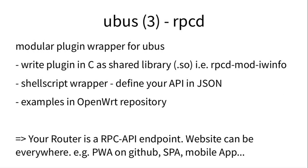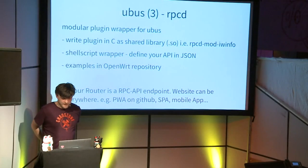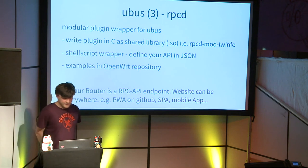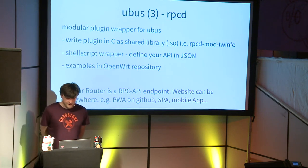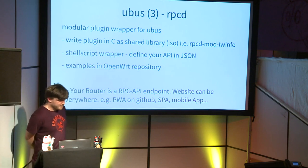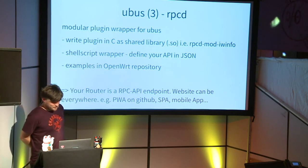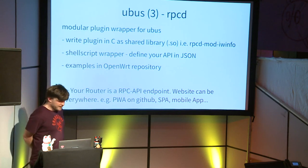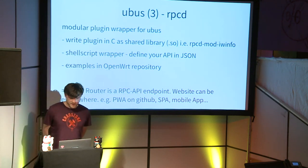If you want to add your own functionality to RPCD, you can write a C shared library or use a shell script wrapper, and RPCD will pass its parameters to your custom shell script. There are many examples in the OpenWRT repository. The basic idea is that the router is just an RPC API endpoint and your client can be anywhere — for example, you can host a static website on GitHub with an input for your router's IP and talk directly to the device.